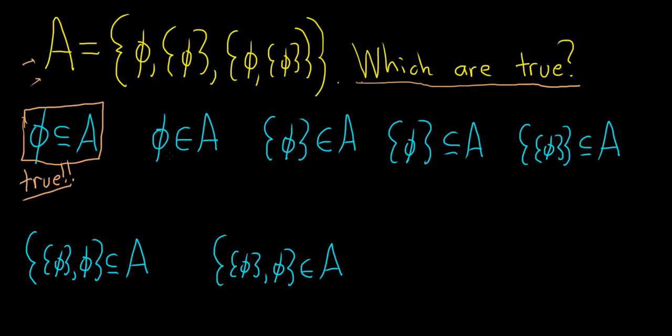The second statement is saying that the empty set is an element of A. Well it certainly is, it's right here, it's one of the members of the set A, it's one of the elements, so this is also true.